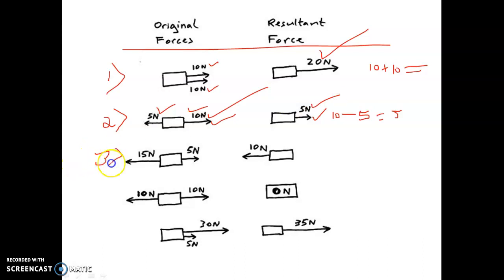Third case: 15 Newton and 5 Newton acting opposite in direction; the resultant is the higher value minus the smaller value, which is 10 Newton, acting towards the higher side. Fourth case: when 10 Newton and 10 Newton are equal and opposite, the resultant is zero — the object remains stationary with no resultant force.